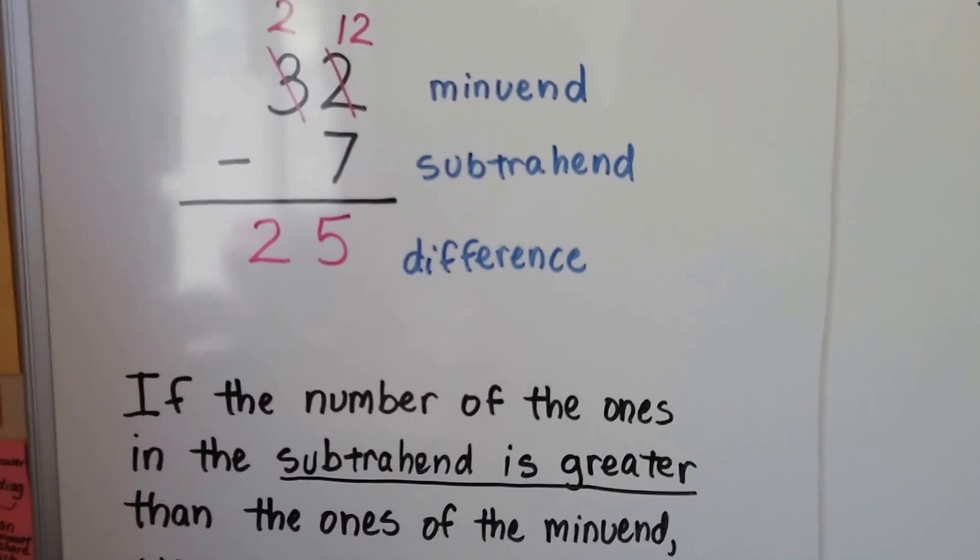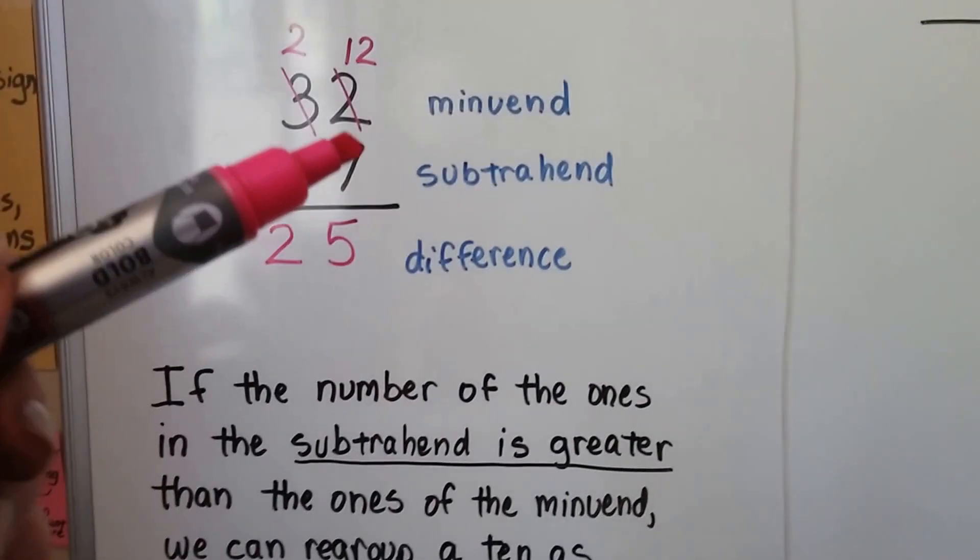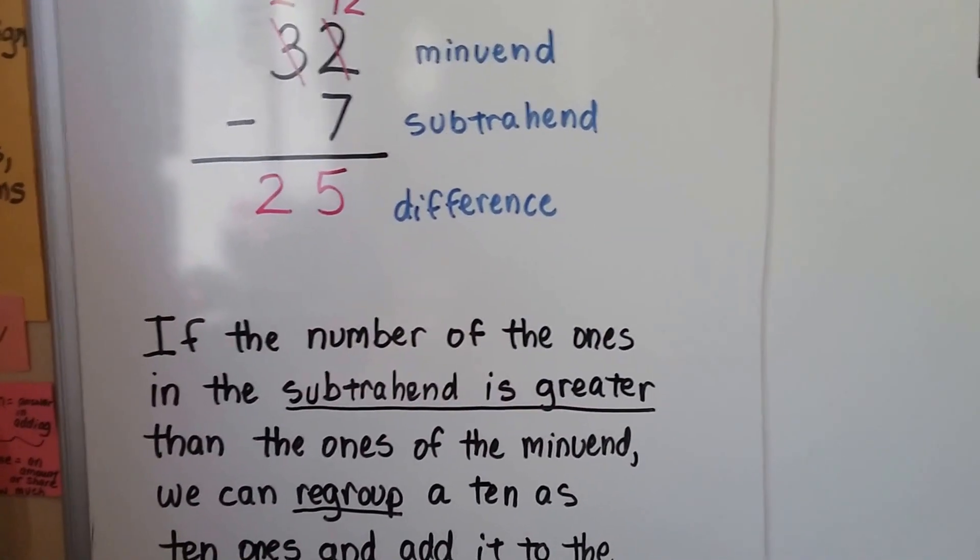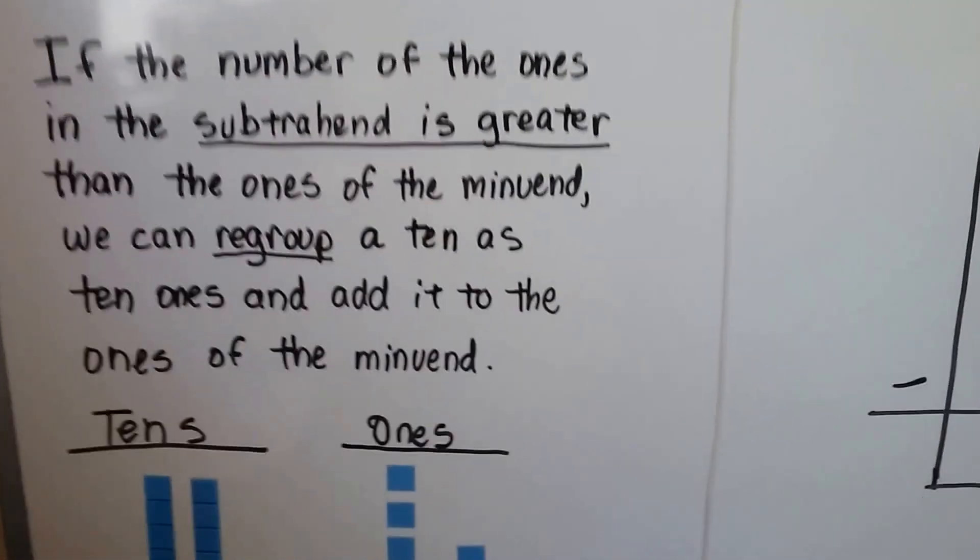If the number of the ones in the subtrahend is greater than the ones in the minuend, we can regroup a 10 as 10 ones and add it to the ones of the minuend.